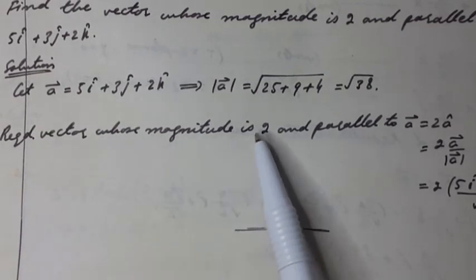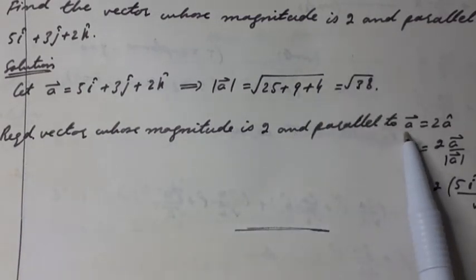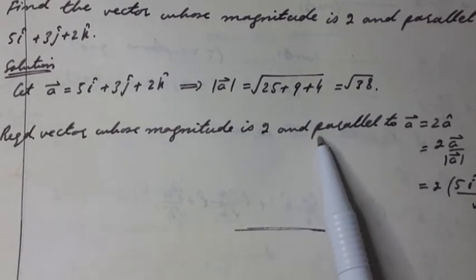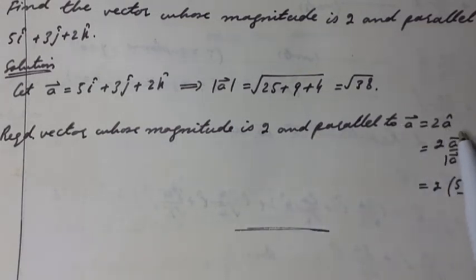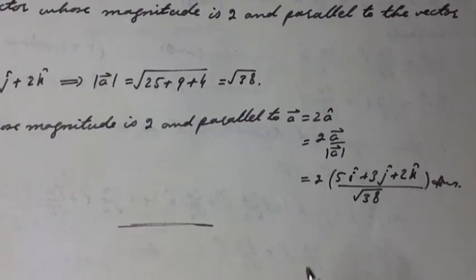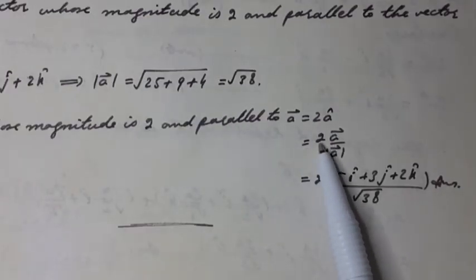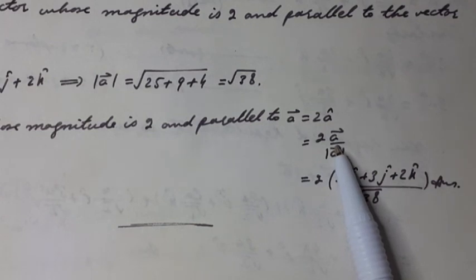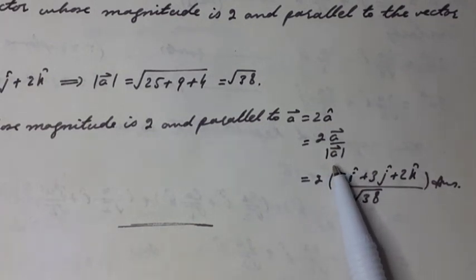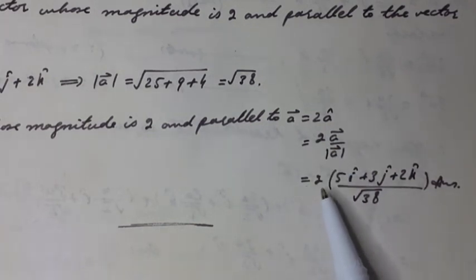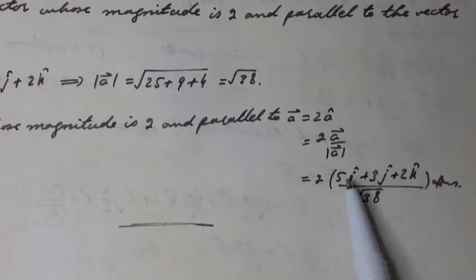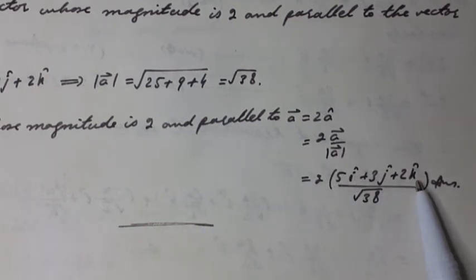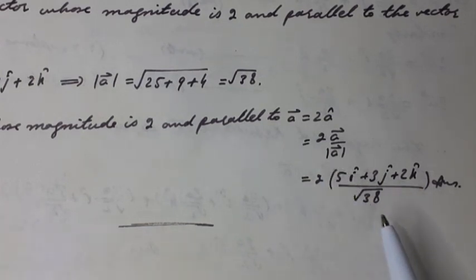Therefore, the required vector whose magnitude is 2 and parallel to vector a, in the direction of vector a, equals 2 times the unit vector â. This equals 2 times (a vector divided by its magnitude), which can be written as 2 into (5î plus 3ĵ plus 2k̂) over √38.